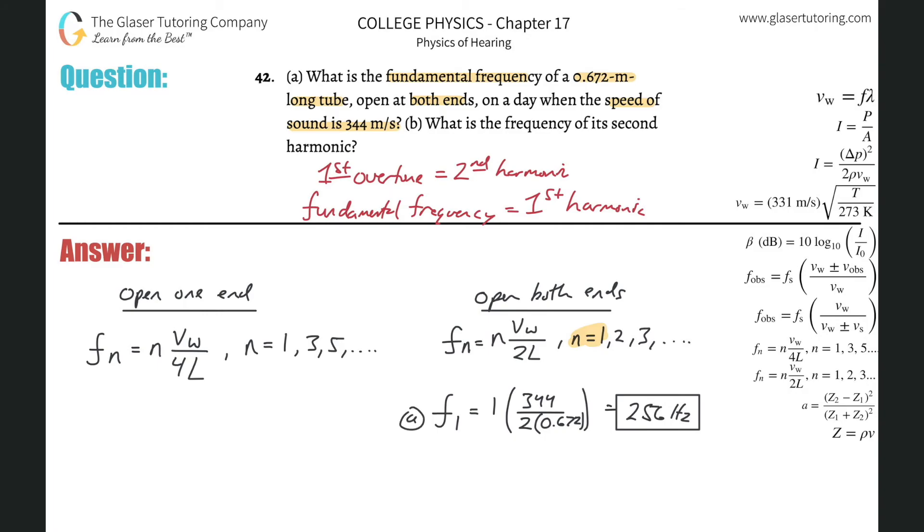Letter B. What is the frequency of its second harmonic? So now all we have to do for letter B then, let me put it in a slightly different color. So it's the same formula because it's still a tube open at both ends. But now we're going to find the frequency of its second harmonic. So N is now two. And we're going to multiply by the same thing. So it's 344, that's the velocity of sound, divided by two times the length of the tube, 0.672.